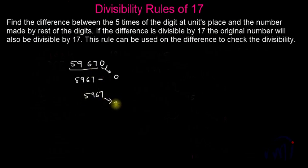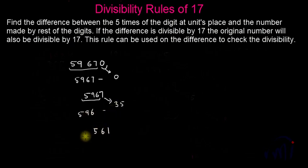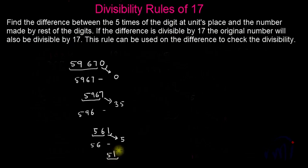Seven multiplied by 5 is 35, and the number made by the rest of the digits is 596. Finding the difference: 596 minus 35 gives us 561. Applying the rule again: 1 multiplied by 5 is 5, and the number made by the rest of the digits is 56. Now 56 minus 5 gives us 51, and we know 51 is divisible by 17. So 561, 5,967, and 59,670 are all divisible by 17.